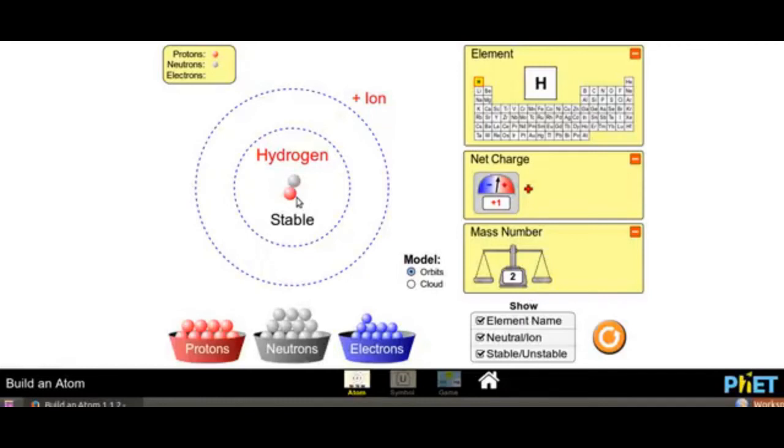Let us add electron to the nucleus. No, electron takes its position on orbit. Let us add another electron. No, electron again went to orbit.